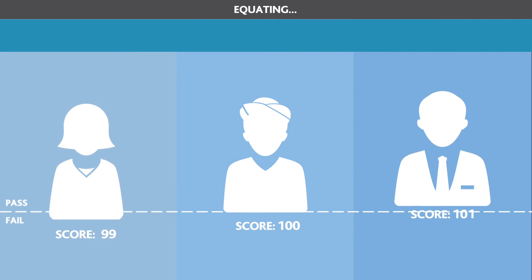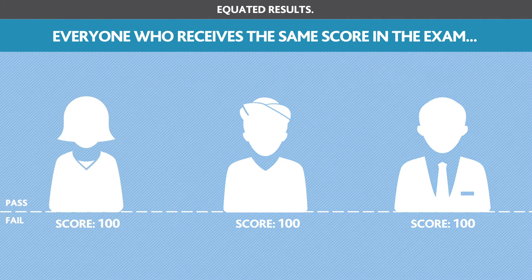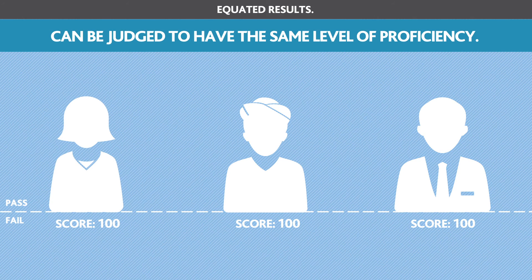Once results have been equated, students can be confident that everyone who receives the same score in the exam can be judged to have the same level of proficiency. Being able to confidently compare performance in exams is useful for students to understand how they performed, and for others such as employers who may also be interested in the score achieved.